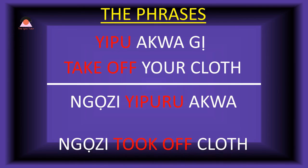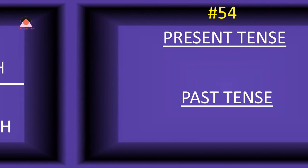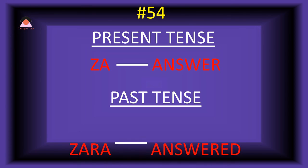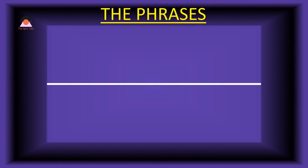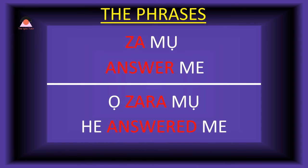Past tense: 'Ngozi iburoa waya' — Ngozi took off her clothes. Word number fifty-four: 'za,' meaning 'answer.' The past tense of za is 'zara,' meaning 'answered.' Present tense phrase: 'za m' — answer me. Past tense: 'o-zara m' — he answered me.